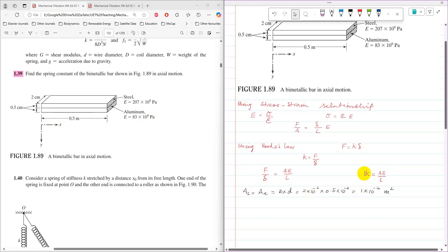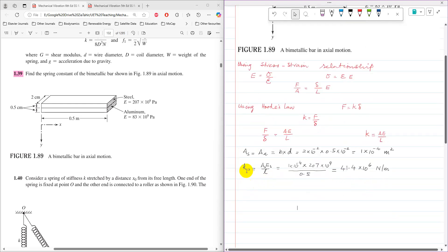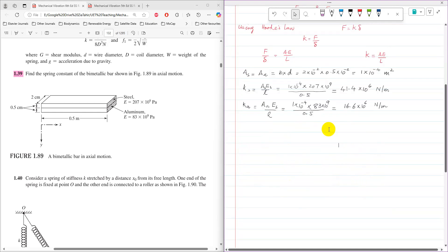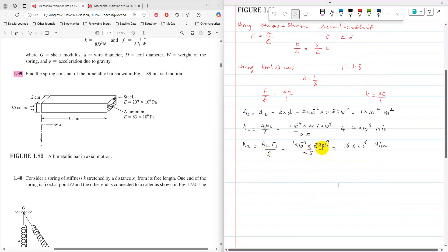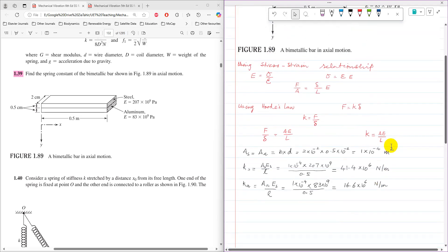The length of both strips is the same. The spring stiffness for each strip can now be calculated. For the steel strip, after substituting values, K_s equals 41.4 times 10 to the power 6 N/m. For the aluminum strip, K_a equals 16.6 times 10 to the power 6 N/m.